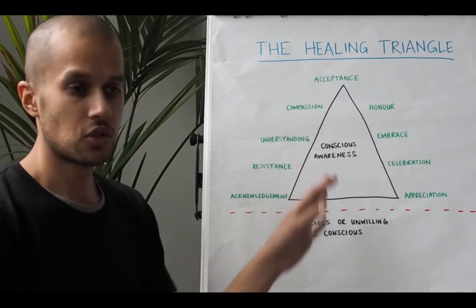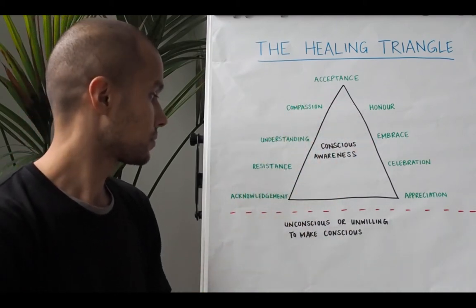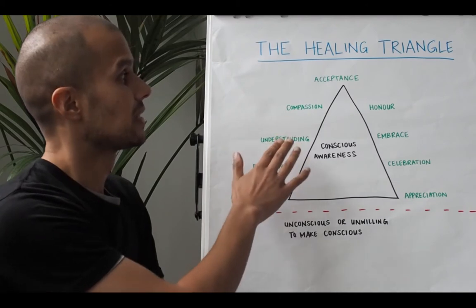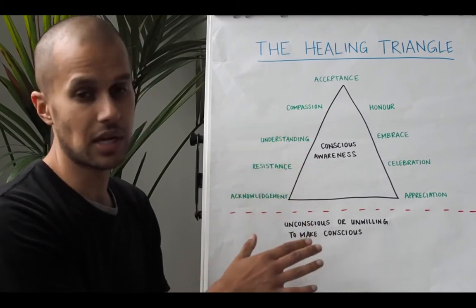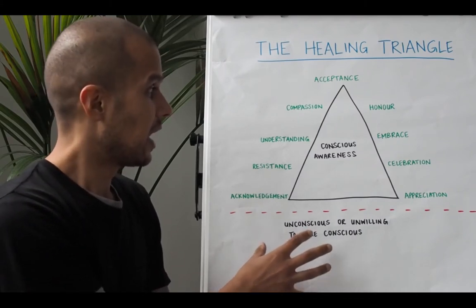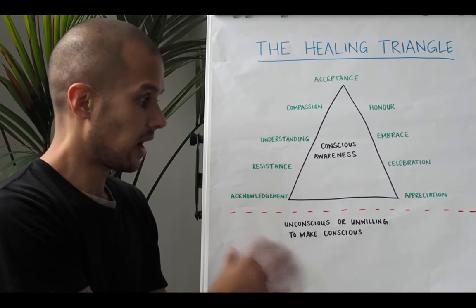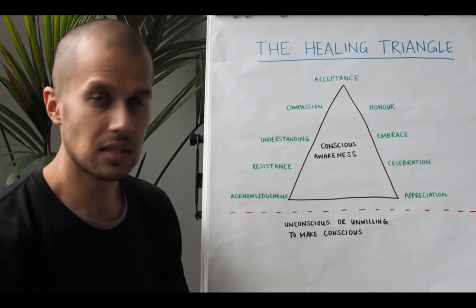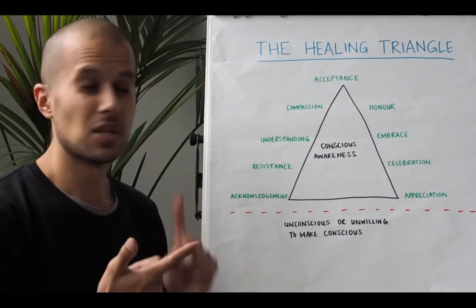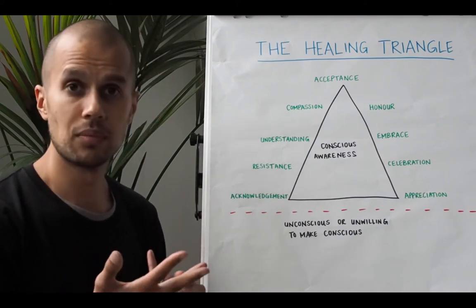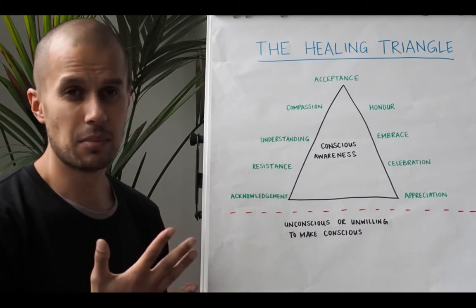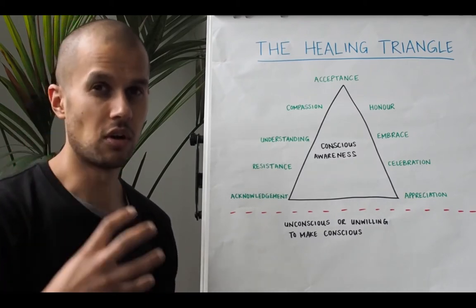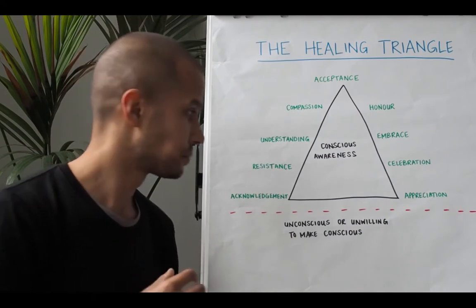Everything inside the Triangle is conscious awareness. The steps are: Acknowledgement, Resistance, Understanding, Compassion, Acceptance, Honour, Embrace, Celebration, and Appreciation. Underneath the triangle you've got everything that's unconscious or whatever you are unwilling to make conscious - things like patterns of avoidance, denial, self-deceit where we lie to ourselves, delusion, repressed emotions, attachment - anything that we're not fully conscious of or that doesn't stay in our conscious awareness.